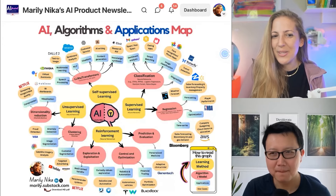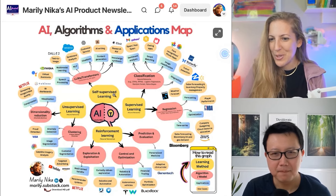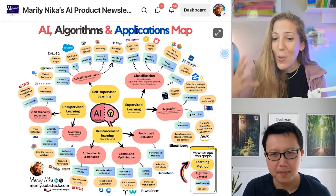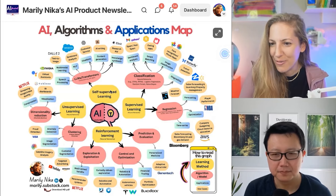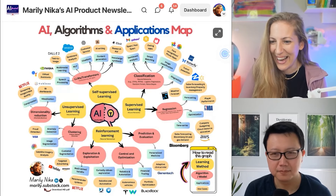What is your definition of AI and how is it different from machine learning? I put together this use cases and applications map. Is it okay if I share my screen as I talk about this? I put together this AI algorithms and applications map just because I'm getting this question so much, and I think this is a really nice way to visualize everything that's happening in AI.